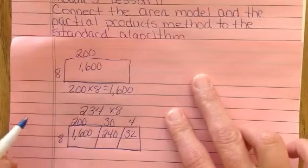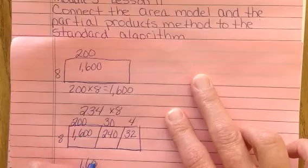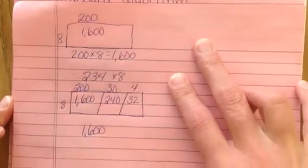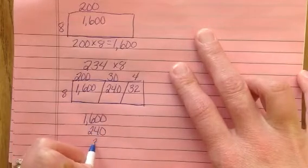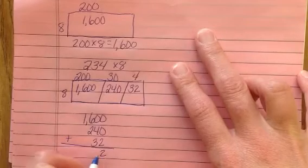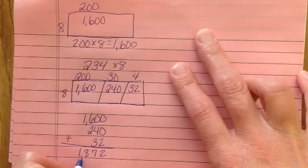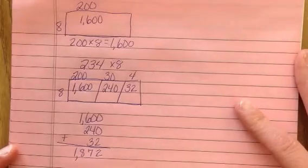If we take and add each of these, 1,600 plus 240 plus 32, 2, 7, 8, 1. Our answer is 1,872.